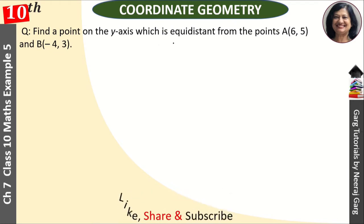Find a point on y-axis which is equidistant from the point A(6, 5) and B(-4, 3).